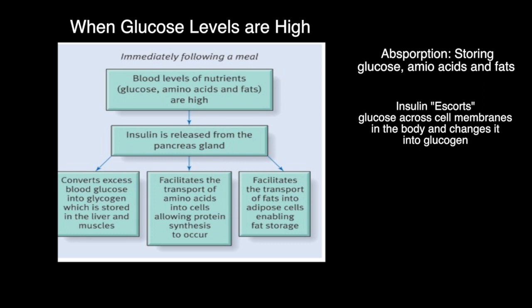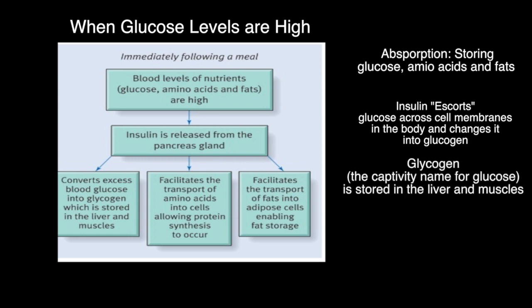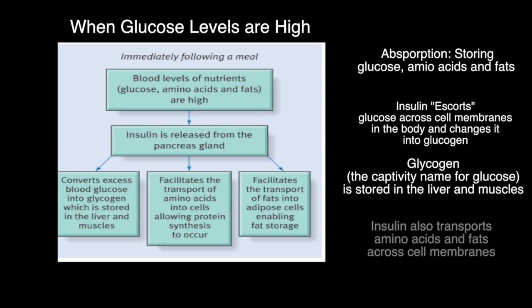This glycogen is stored often in the cells of the liver as well as in the muscles, and then it can be used later. Insulin also transports amino acids into cells and it transports fats into cells. That is the role of insulin immediately following a meal.